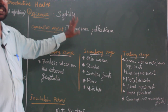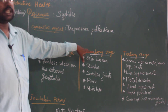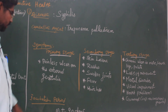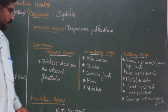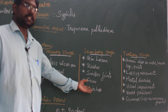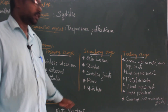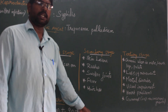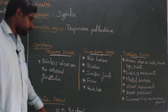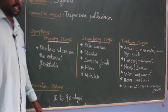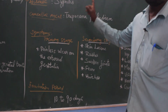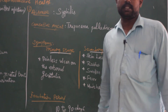Treponema pallidum is the bacteria causing syphilis. The incubation period for syphilis is 10 to 90 days — within 10 to 90 days these symptoms appear. In this video we have seen two bacterial diseases: gonorrhea and syphilis. In the next video there will be two more bacterial diseases.